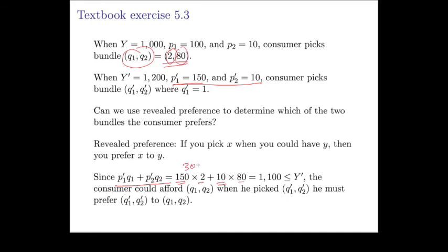Altogether, that's 300 plus 800, which is 1,100. But that's less than 1,200, so this consumer could have purchased the bundle (q1, q2) in the second scenario.